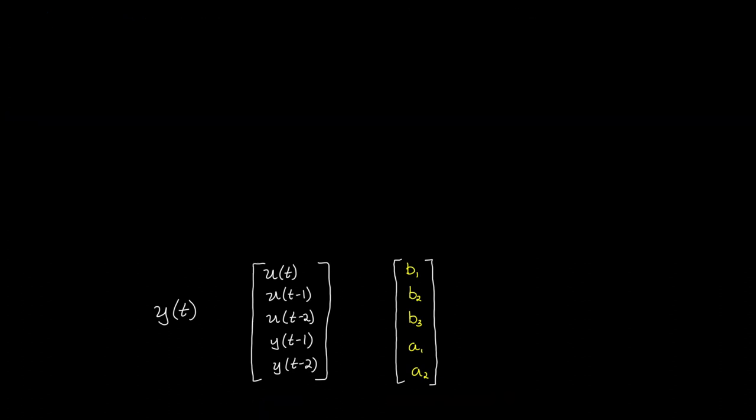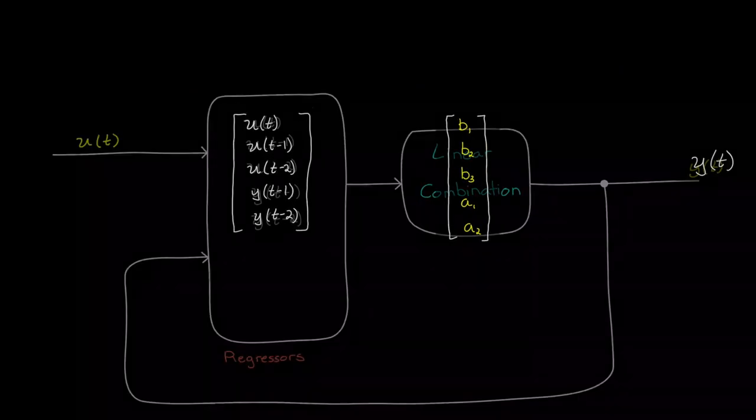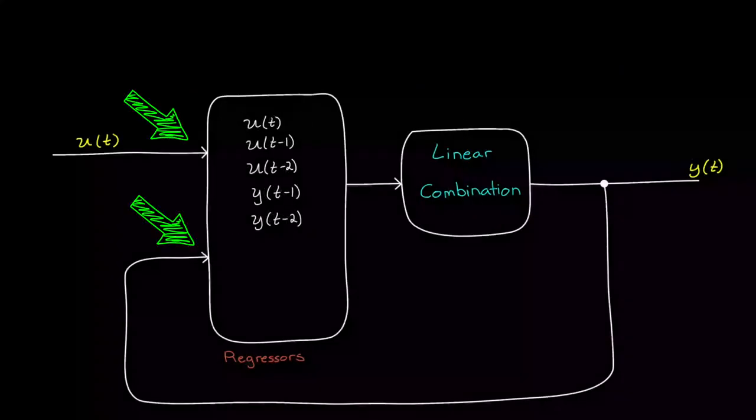Now let's put this two-part equation into block diagram form. The input and output both enter this block to create the regressor vector, and that feeds into the linear output function, or the linear combination of those regressors. The product of those produces the predicted output. This is our linear ARX model.